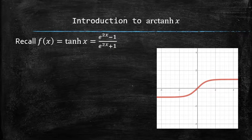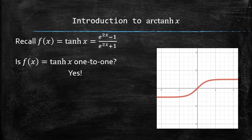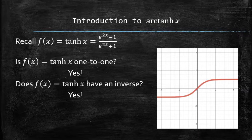Is this function one-to-one? The answer is yes, because it passes the horizontal line test. Does this function have an inverse? The answer is also yes, because it is a one-to-one function and all one-to-one functions have an inverse.